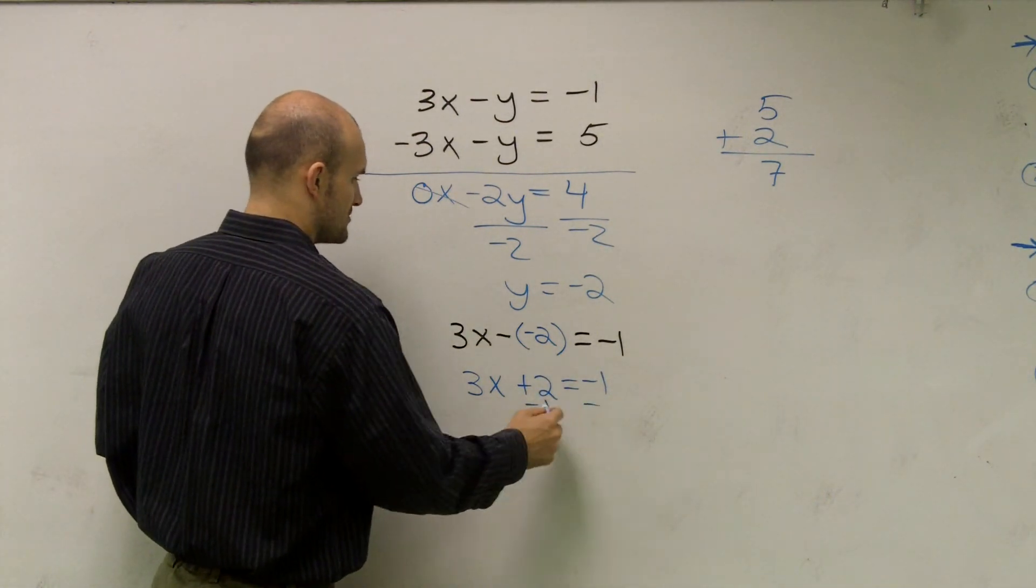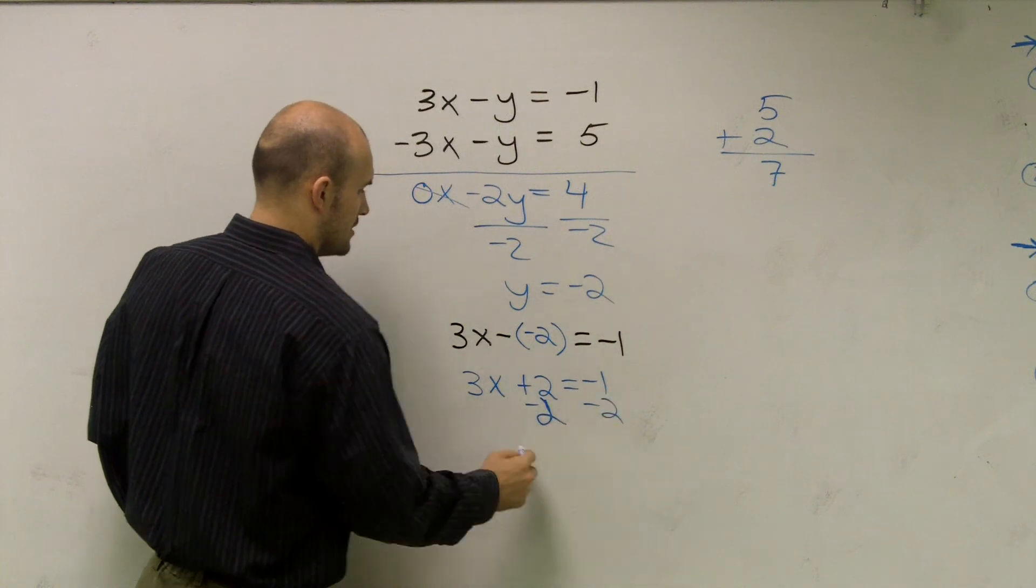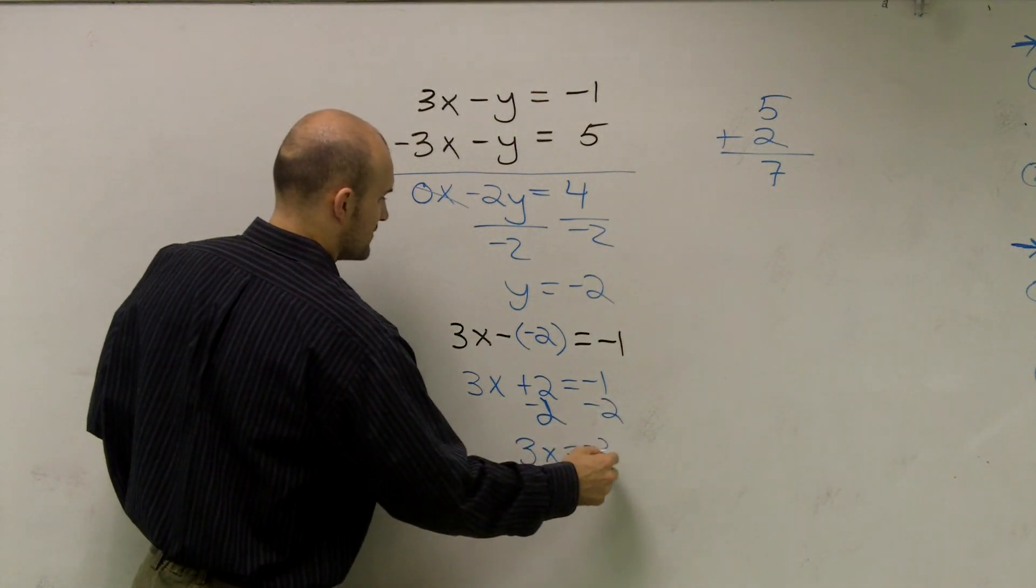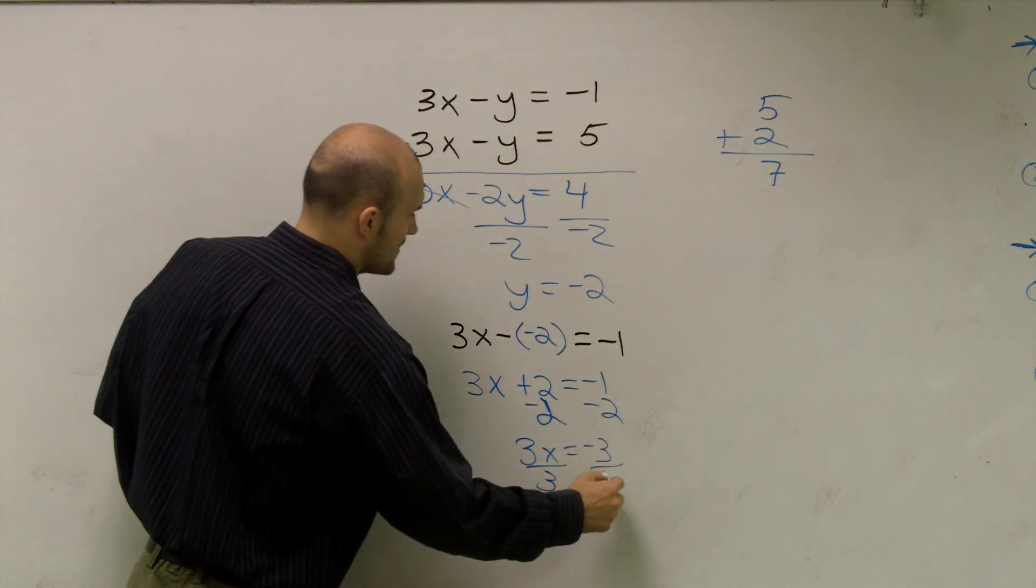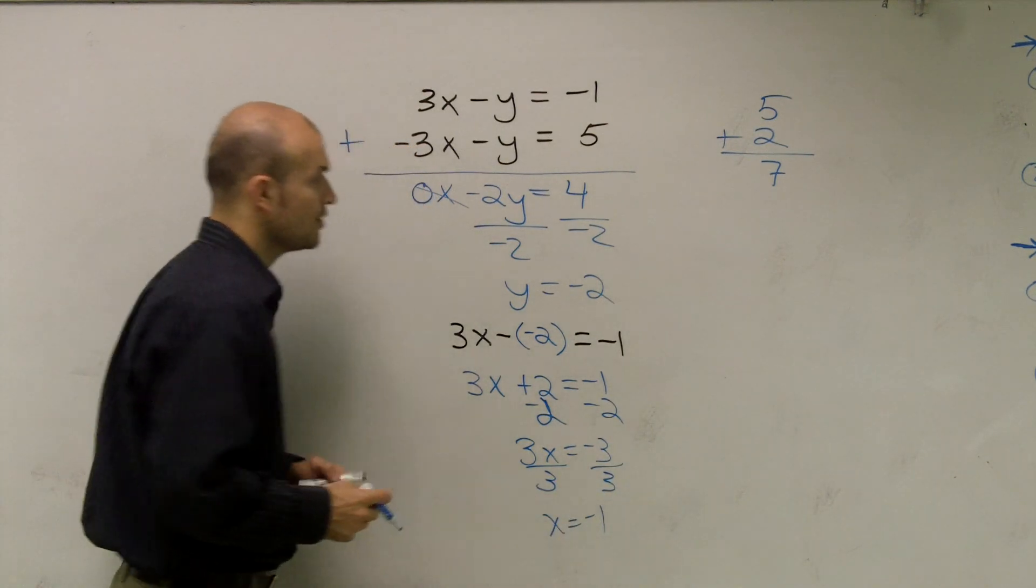Subtract the 2, get 3x equals negative 3, divided by 3, x equals negative 1.